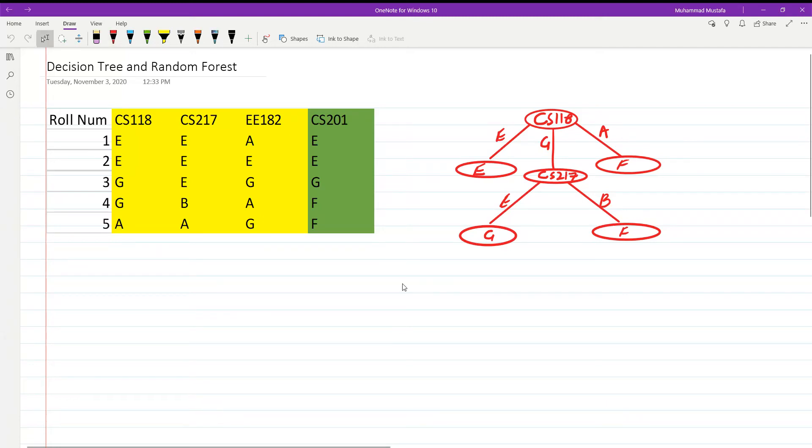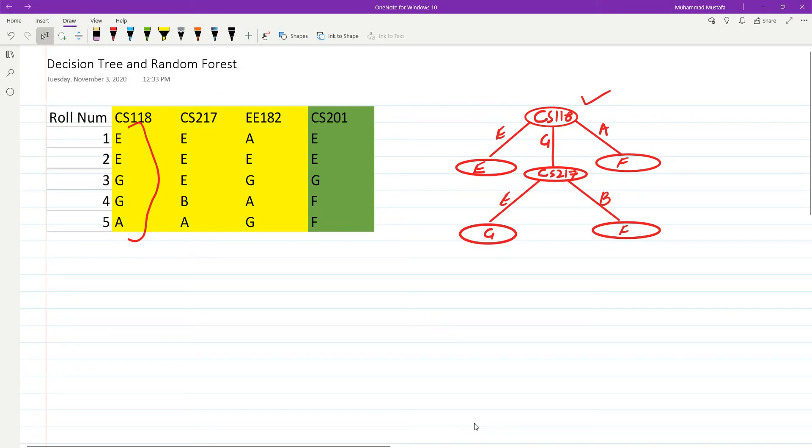In the previous video we saw that given this data we had this tree here. We picked this cs118 course feature as the root node, and this tree actually generates a set of rules to predict the grade of course cs201.